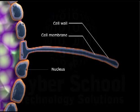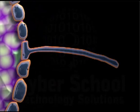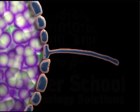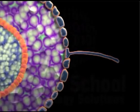The root hair cell is thin and long, thus it increases the absorptive surface. Water enters the root hair cell by a process called osmosis.